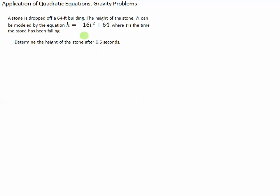In this particular problem, a stone is dropped off a 64-foot building, and the height of the stone, h, can be modeled with this equation: h = -16t² + 64, where t is the time the stone has been falling. Let's mention that the time here is in seconds.